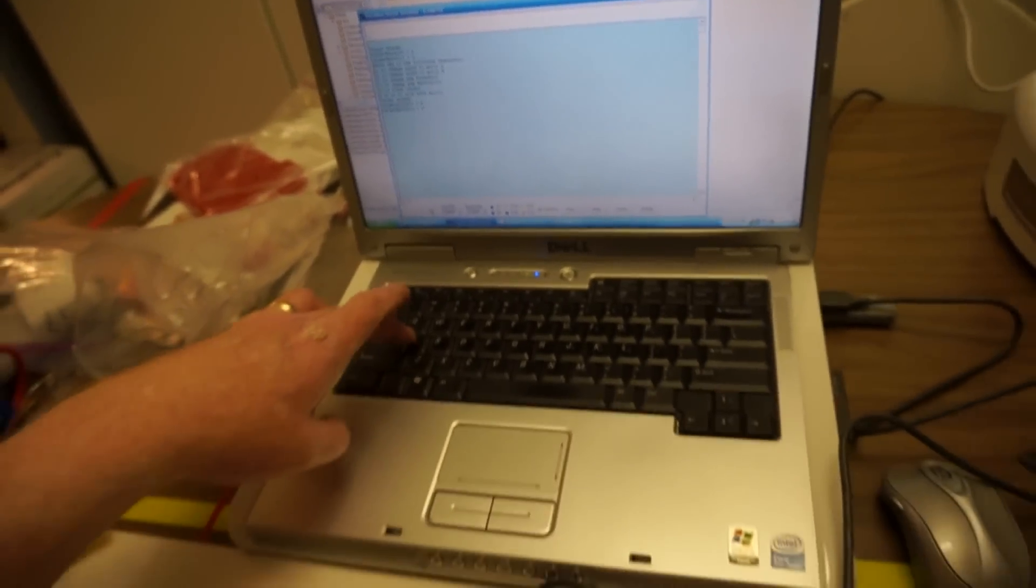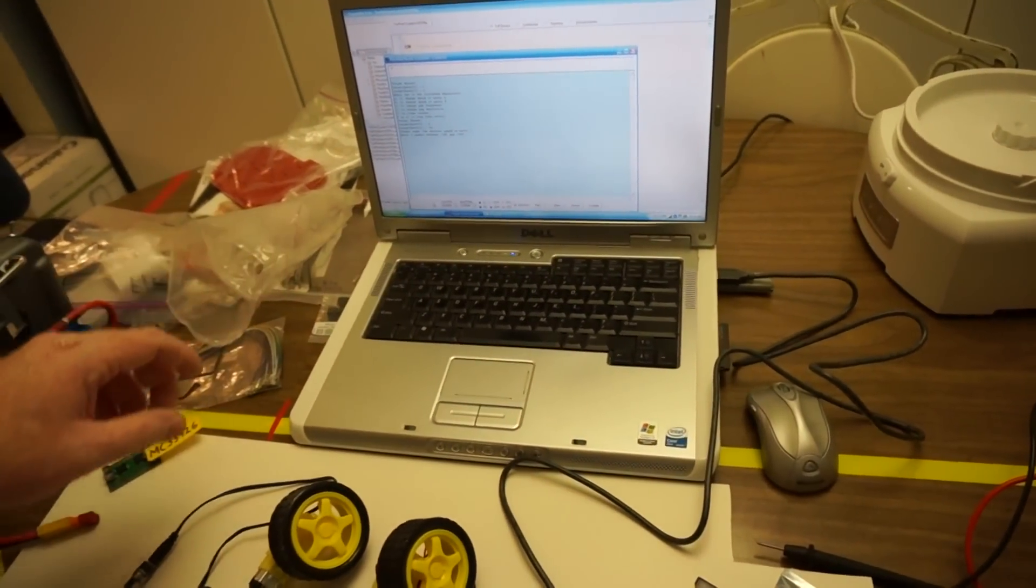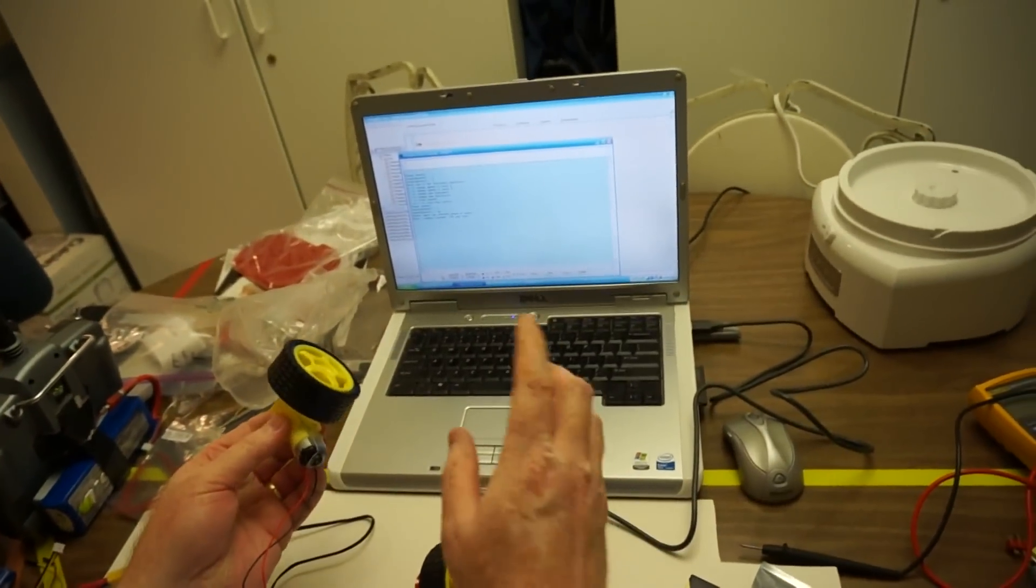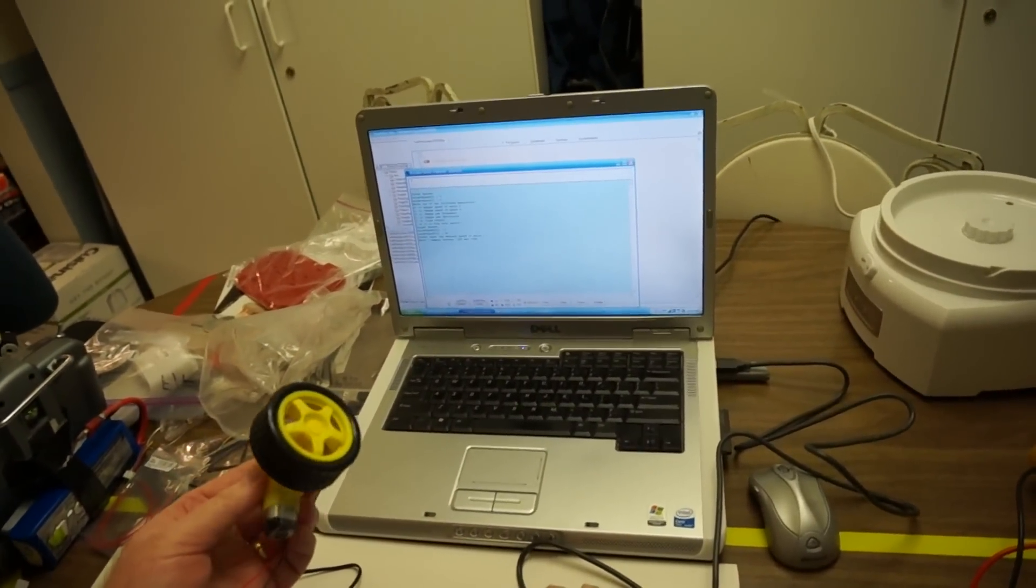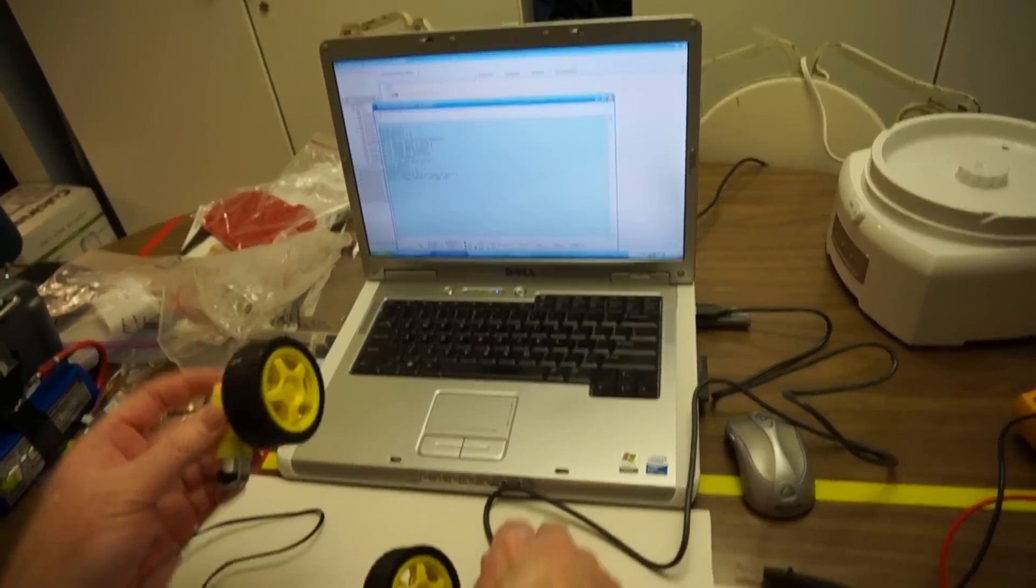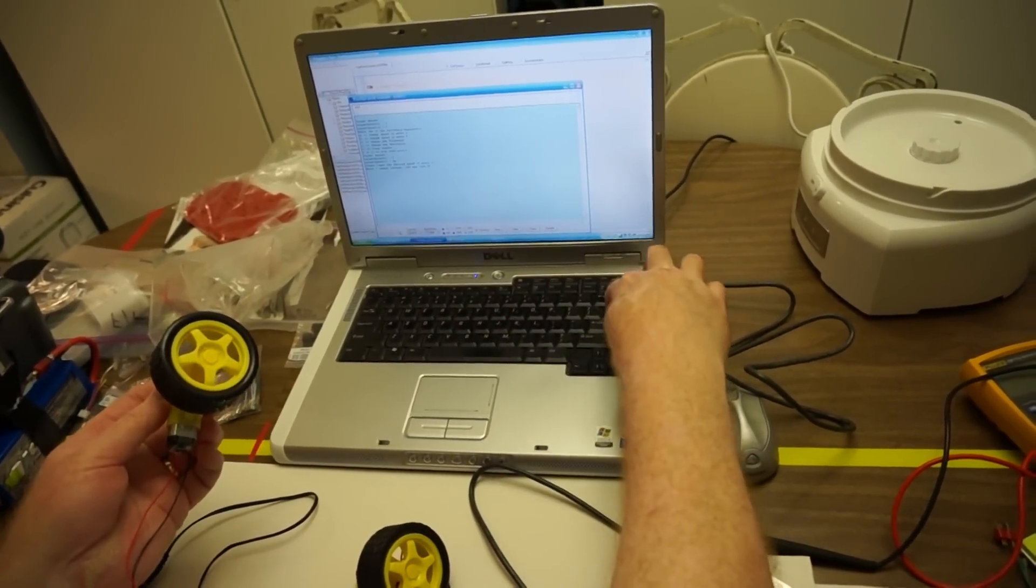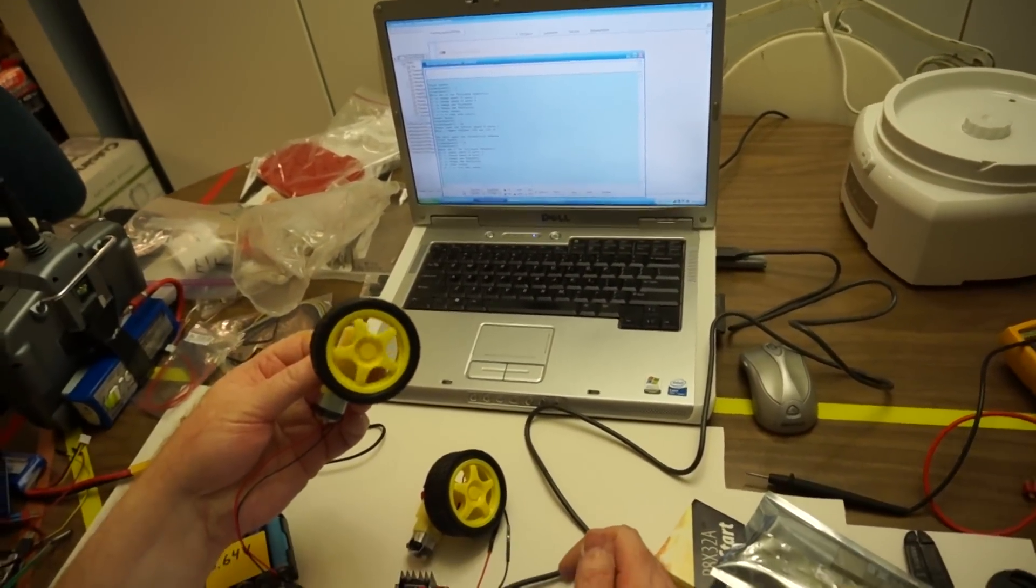So I'm going to push A, and then it'll ask me to input the speed of motor A. And right now the range is between negative 100 and positive 100. So I'm going to do 50. And there's the motor.